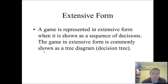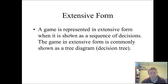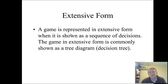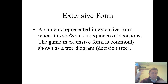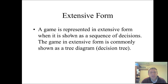A game is represented in extensive form when it's shown as a sequence of decisions. If a game is sequential, the game tree makes sense because in a payoff matrix you have no idea of the timing or sequence of events without more information. Whereas with a tree diagram, you know who's moving first, second, third — everything is laid out in the tree. It really does seem to fit more intuitively with sequential games.